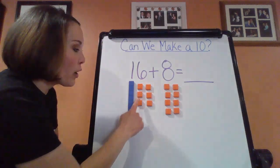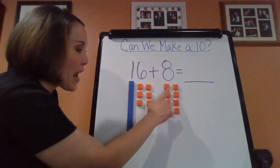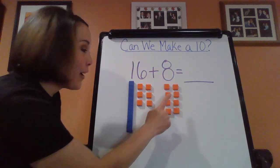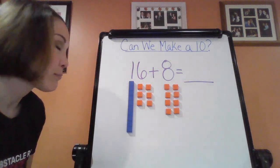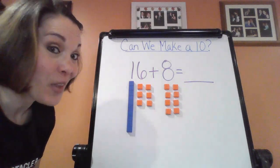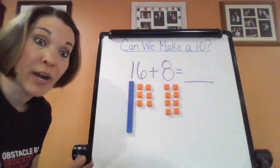One, two, three, four, five, six, seven, eight, nine, 10, 11, 12, 13, 14. Well, we counted 14 ones. So can we make a 10? Oh, yes, because 14 is greater than 10.